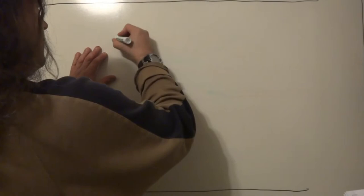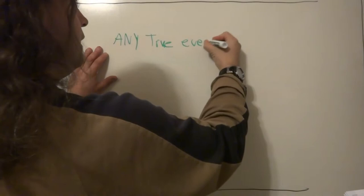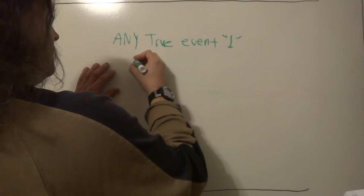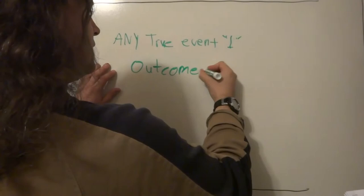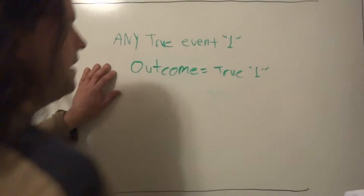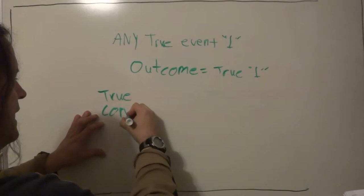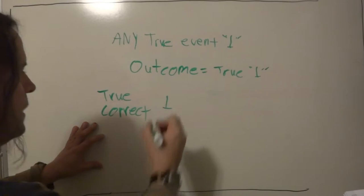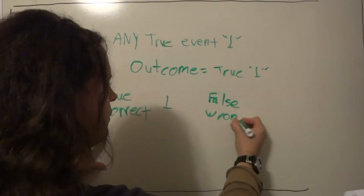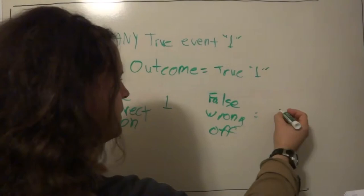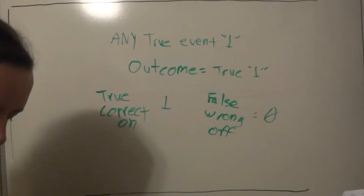It's a simple condition where if you have any true event, in this case represented by a one, the outcome will also be true, which equals one. In a lot of cases, to represent true or correct, usually the number one is used. False, wrong, off. On for true, by the way. Typically, a zero is used. It just makes things a little more simplified.